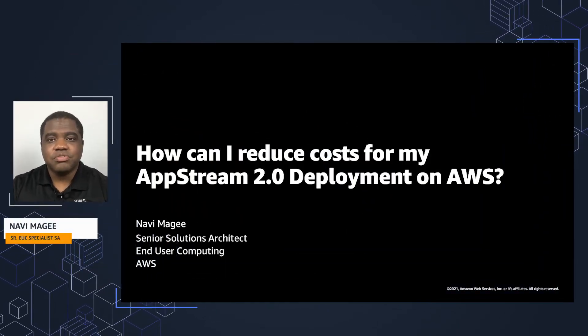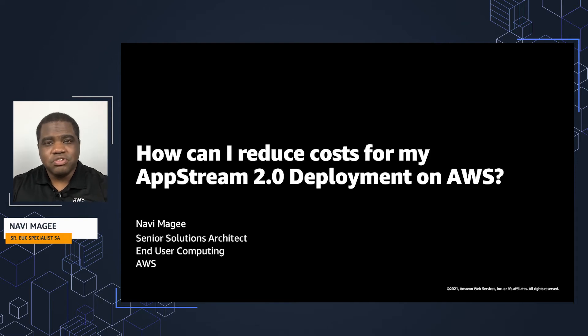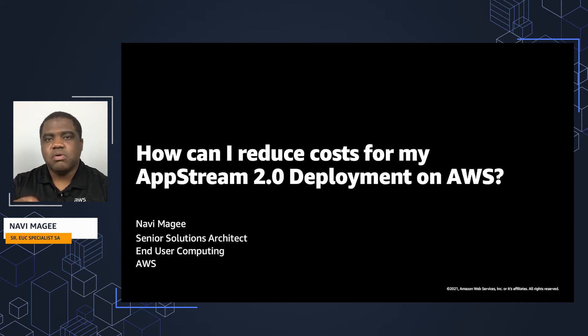Good morning, good afternoon, good evening. My name is Navi McGee. I'm a Senior Solutions Architect with AWS and I would like to welcome you to the session on how can I reduce costs for my AppStream 2.0 deployment. Has your manager asked you to reduce your overall bill with AWS? Have you wondered if you're turning all of the knobs possible to reduce your costs? These are just some of the key questions that we're going to target in today's session.